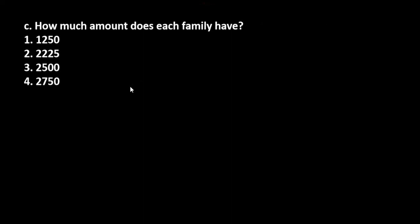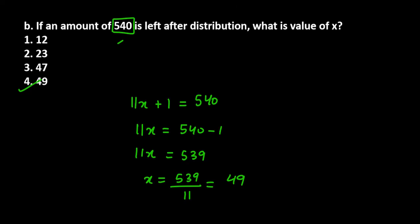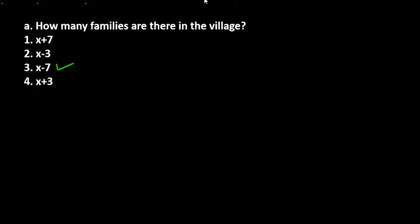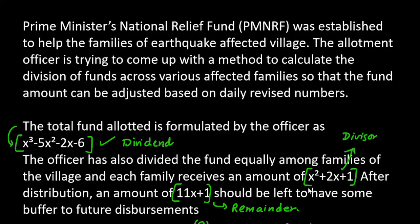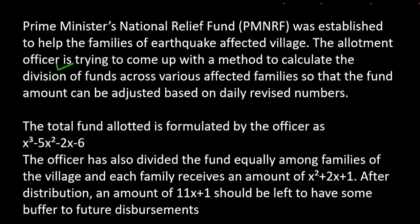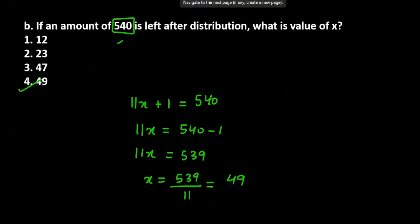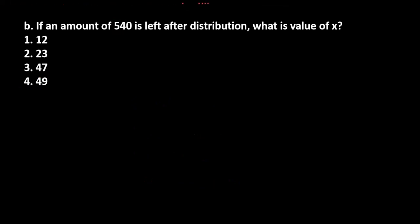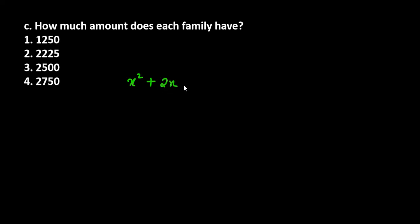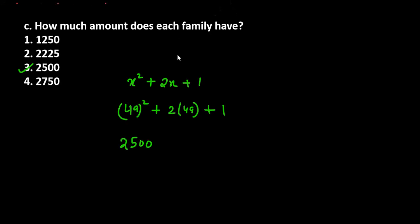Now moving to Part C: how much amount does each family get? The amount per family was given as x² + 2x + 1. We have x = 49 from Part B. Now we substitute x = 49 into the equation: 49² + 2×49 + 1. When you solve this, the answer is 2500. So each family receives 2500 rupees.